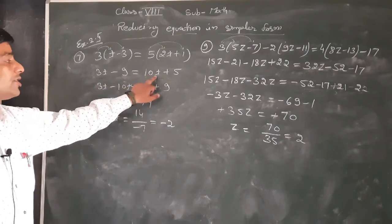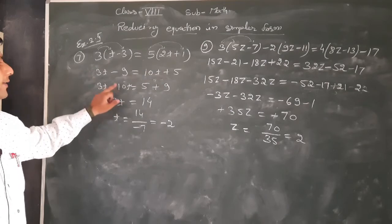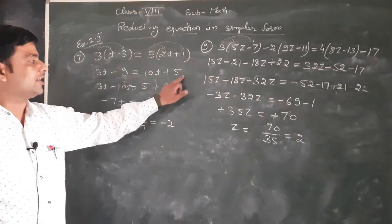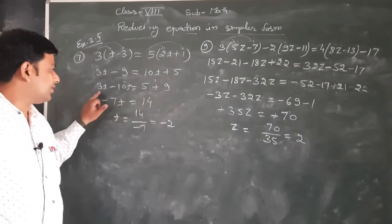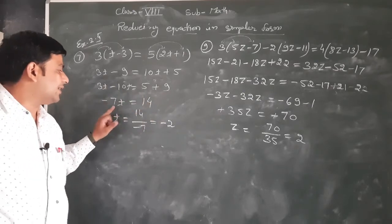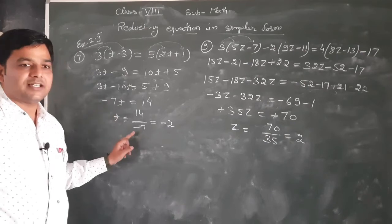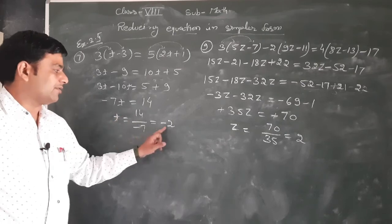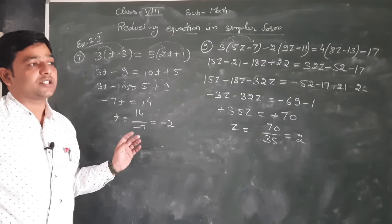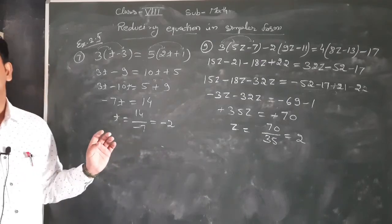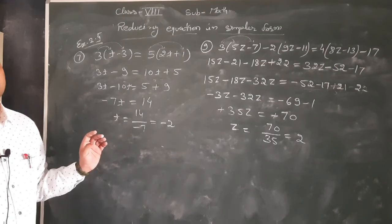Ab solve करते हैं। Positive 10t है, variable को one side लेना है — minus 10t हो जाएगा। Minus 9 को इस तरफ transpose करेंगे तो plus 9 हो जाएगा। 9 + 5 = 14। 3t - 10t = -7t। t की value find करनी है: -7 multiply में है, divide में चला जाएगा। 14/(-7) = -2. Sign same रहता है division में, इसलिए t = -2.